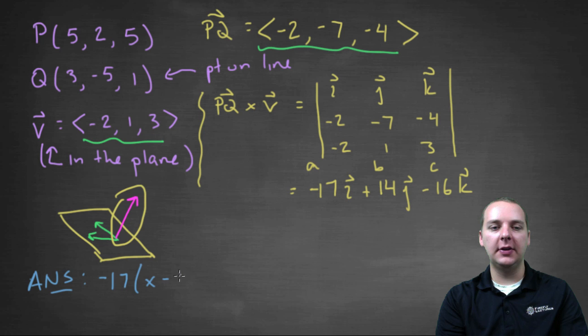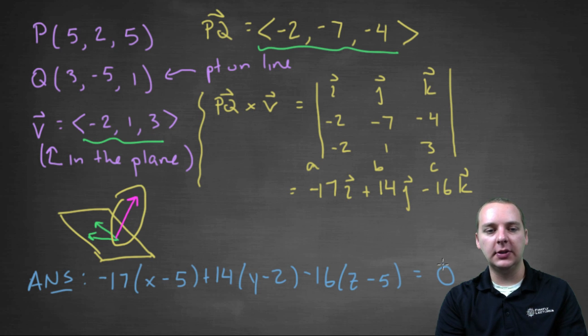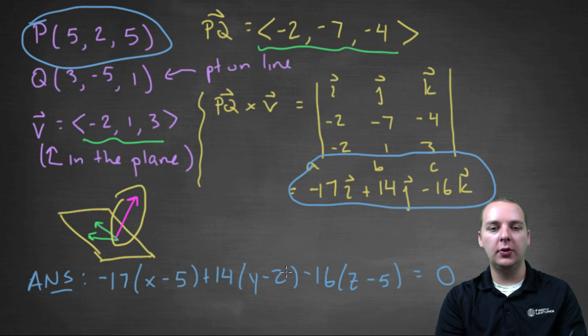So we'll do -17 times (X - 5), plus 14 times (Y - 2), minus 16 times (Z - 5), equals zero. So this is of course the equation of a plane, given a point in the plane and a normal vector to the plane.